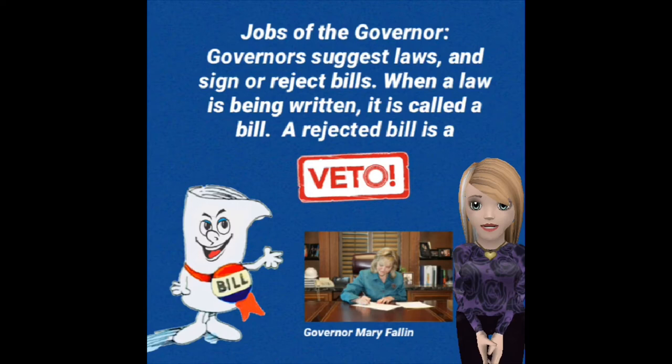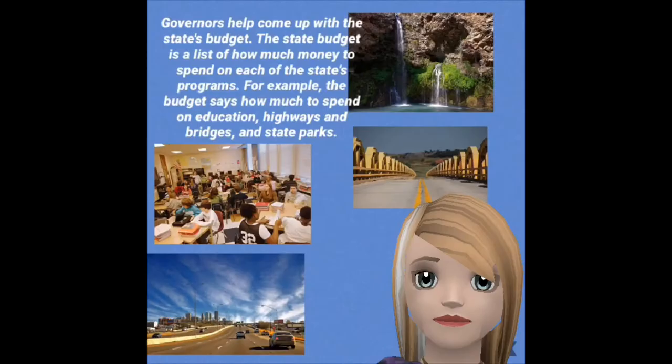Jobs of the governor: Governors suggest laws and sign or reject bills. When a law is being written, it is called a bill. A rejected bill is a veto. Governors help come up with the state's budget. The state budget is a list of how much money to spend on each of the state's programs.